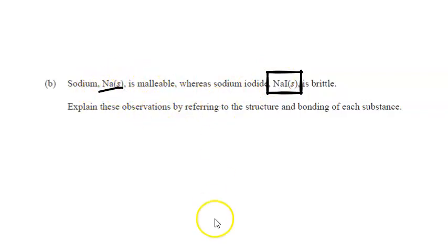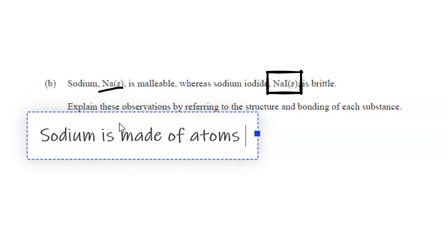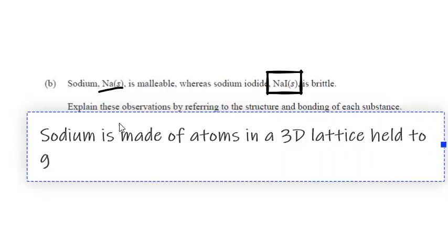Sodium is malleable. So what we need to do with any properties, any question about the properties of metals or any substance is to start with a sentence describing the structure and bonding of the substance. So we would say sodium is made of atoms in a 3D lattice, non-directionally held together by non-directional metallic bonds.